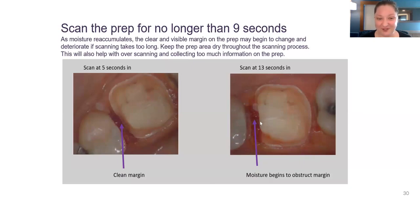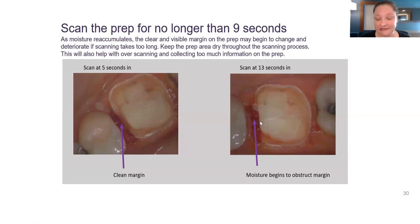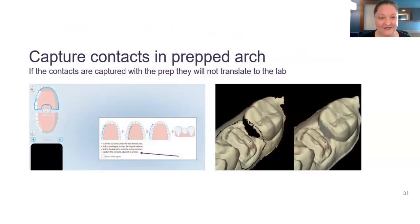This is a favorite slide — it demonstrates what a clean and clear margin looks like after five seconds of scanning, and then at 13 seconds we see that fluid has really obscured the margin. Time is of the essence. With the iTero specifically, the way the software stitches data together, the adjacent contacts will need to be captured in the prep arch segment.